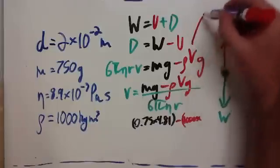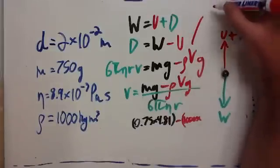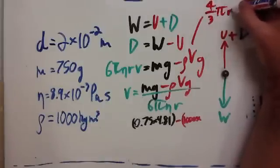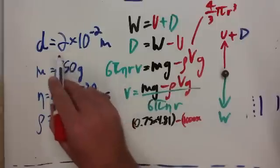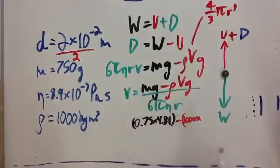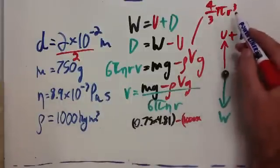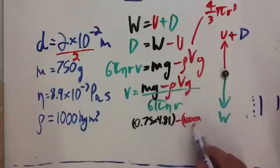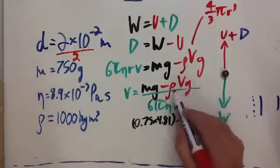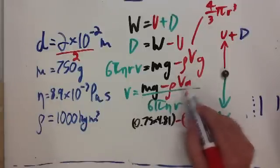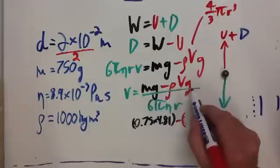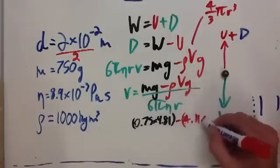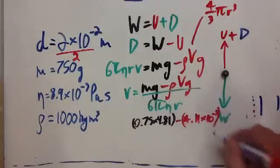Now, the volume of the sphere is going to have to be worked out. The volume of the sphere is 4 over 3 pi r cubed. So, we've got the density, so all we need to do is divide that by 2, and that will give us the radius. So, then we've got the volume. G will be 9.81. So, we've got 1,000, which is the density, times volume, which you'll have to work out, times G, and that gives us a total of 4.11 times 10 to the minus 3.